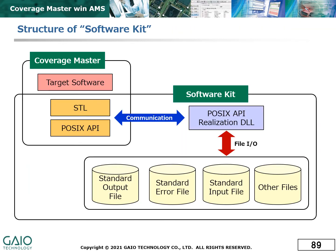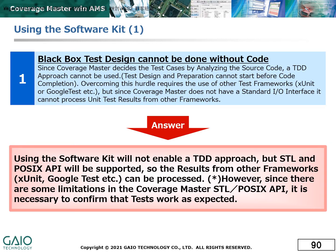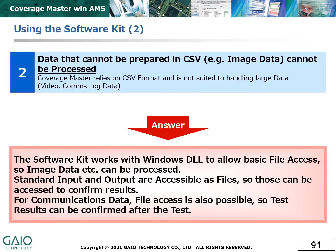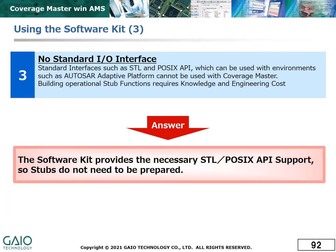The Software Kit option combines the CoverageMaster WinAMS tool and the existing user environment into an effective and efficient development environment. Using the Software Kit option, test results from other frameworks can be integrated into the project, allowing testing to progress faster. Since the input data for CoverageMaster WinAMS is normally in CSV format, it is not capable of handling large-volume data such as video, as used in automatic driving systems, and communications log files. The Software Kit option enables DLL basic file access, so these types of large-volume data can also be used in testing. It also provides support for the standard interfaces of STL and the POSIX API, removing the need for these to be developed on a project-by-project basis.